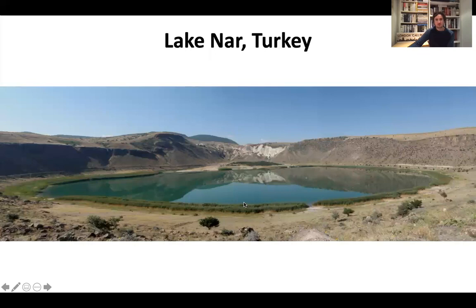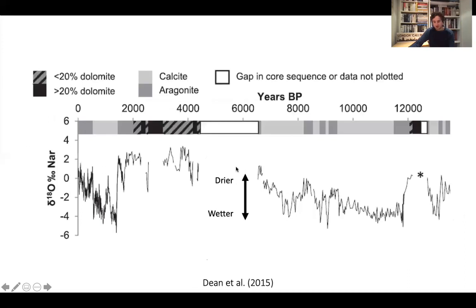An example of a closed lake is Lake Nahr, which I've worked on in Turkey. I showed you the oxygen isotope record from the lake sediments in the first lecture. Because it's a closed lake, higher values mean basically drier climate and lower values mean wetter — more specifically, drier means more evaporation and/or less precipitation, and wetter means more precipitation and/or less evaporation.